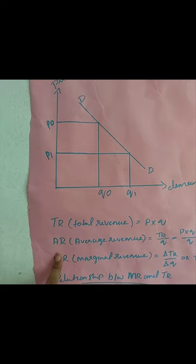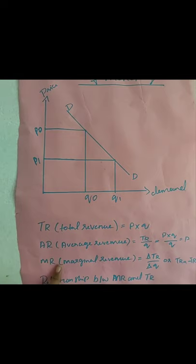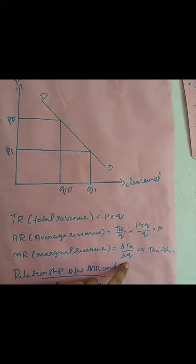Marginal revenue is the addition to total revenue when an extra unit is sold. It is the rate of change of TR. Therefore, MR equals delta TR divided by delta Q, or TR(n) minus TR(n-1).